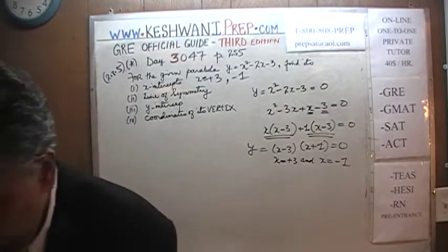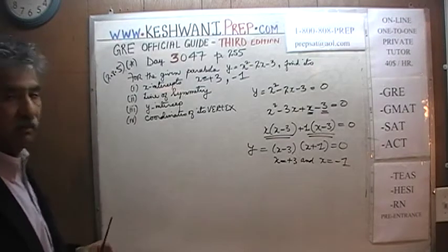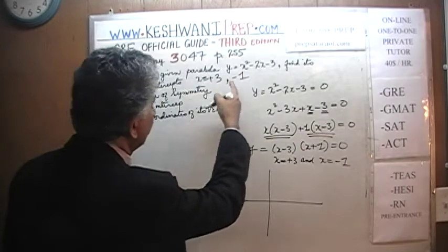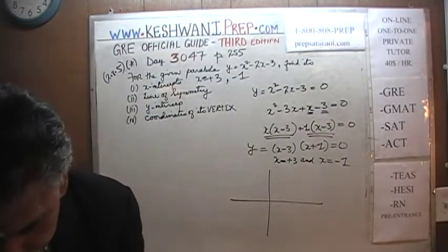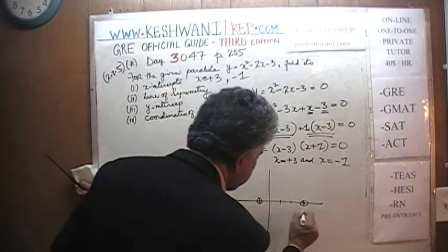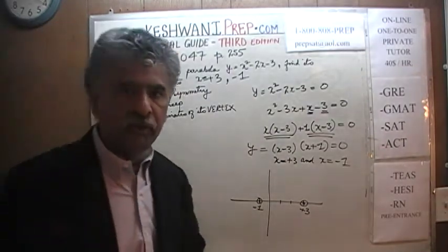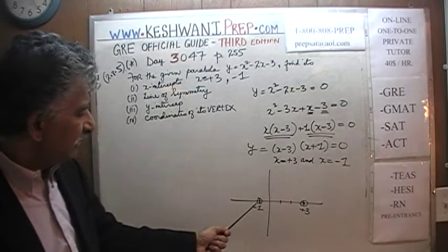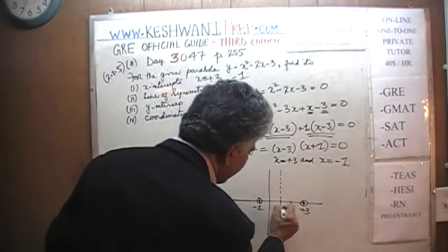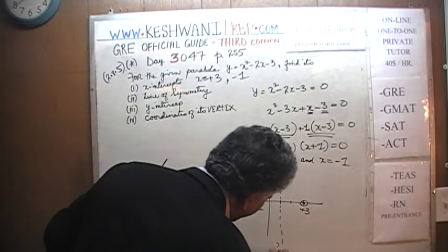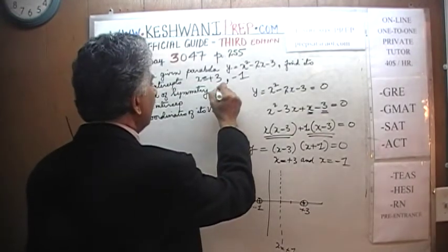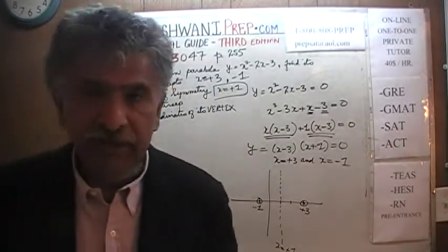Now let's find the line of symmetry. We know the X-intercepts are positive 3 and negative 1. From negative 1 to positive 3 we have 4 units, which means the line of symmetry is exactly in the middle — 2 units from each intercept. That puts X equal to positive 1. So the equation of the line of symmetry is X = 1.